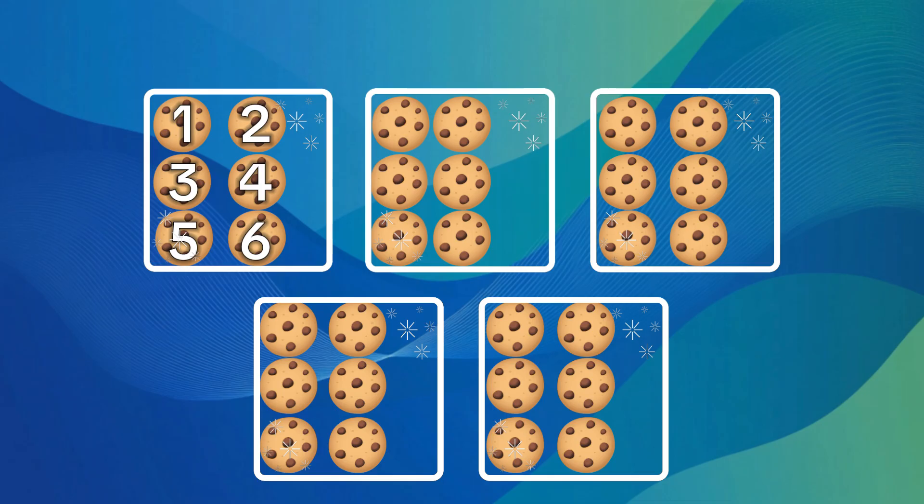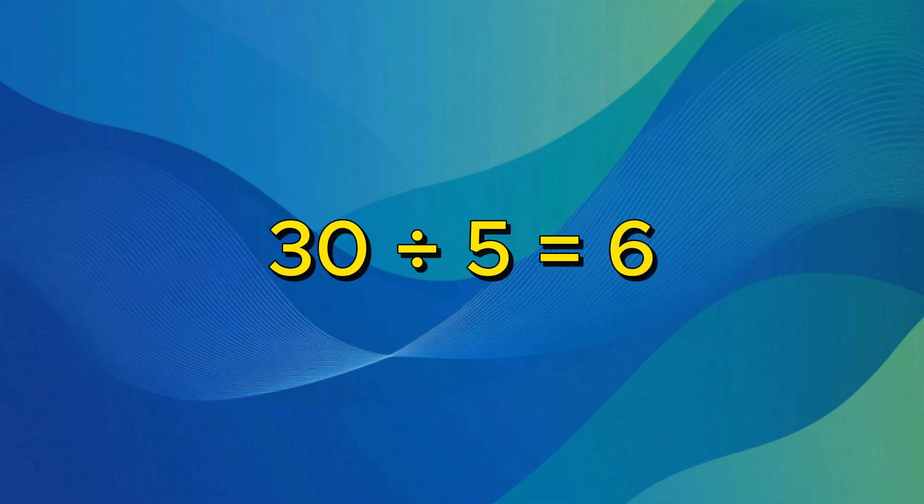In this case, we have 6 cookies in each box, so that gives us our answer. 30 divided by 5 equals 6.